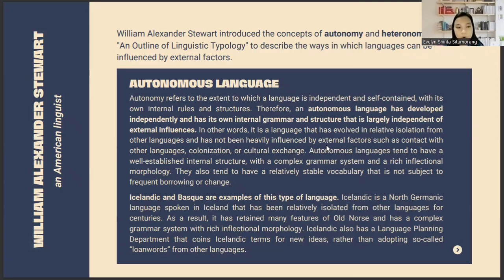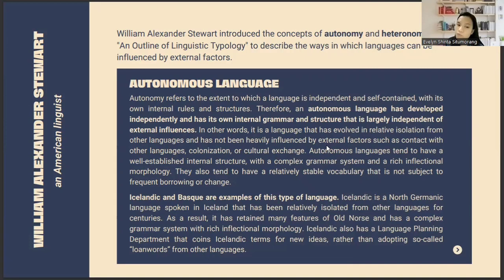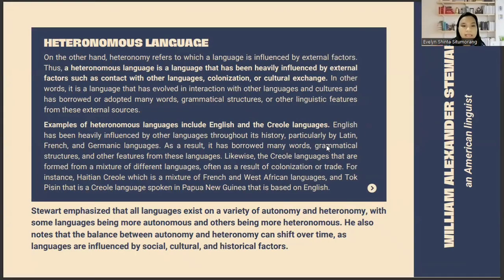For instance, Icelandic is a North Germanic language spoken in Iceland that has been relatively isolated from other languages for centuries. As a result, it has retained many features of Old Norse and has a complex grammar system featuring inflectional morphology. Icelandic also has a language planning department that coins Icelandic terms for new concepts rather than adopting loanwords from other languages. The other type is heteronomous language, where a language has been heavily influenced by external factors such as contact with other languages, colonization, and cultural exchange.